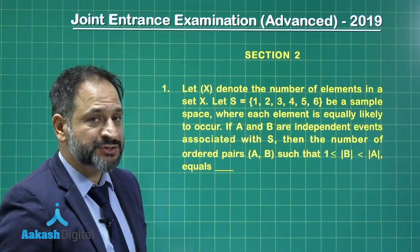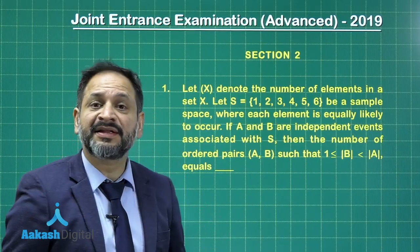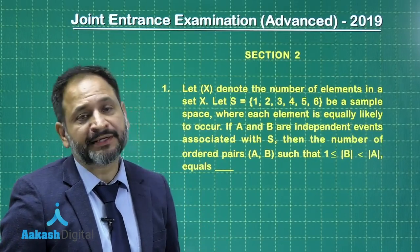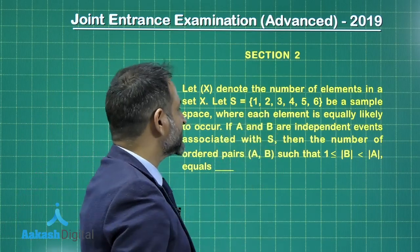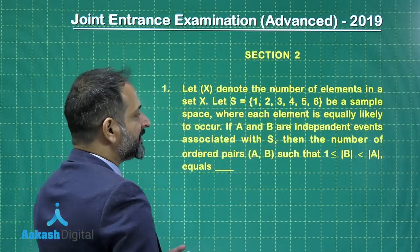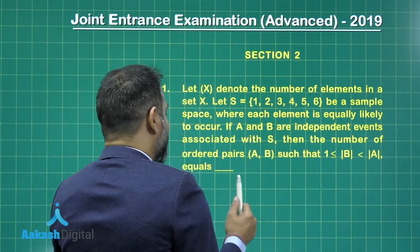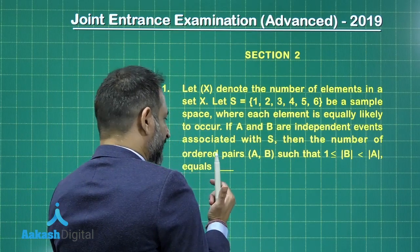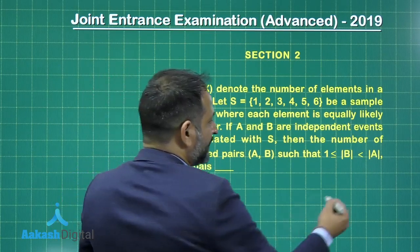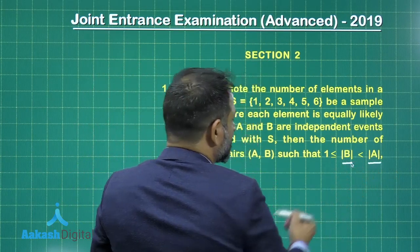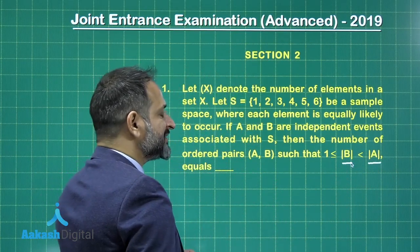Let us move on to Section 2, which covers integer type problems. There is no negative marking; plus 3 for the correct answer. The set S contains elements from 1 to 6. We have to select A and B, which are two independent events such that the elements in A will be greater than B. Let us see how this can be done — a question on selections.